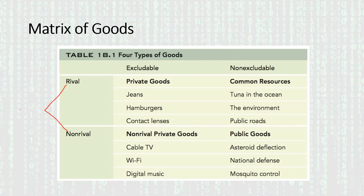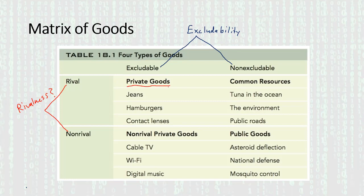So this is the rival dimension, and then on the basis of whether they are excludable or non-excludable — that's the excludability dimension. We have categories for the four different kinds of goods. If goods are both rival and excludable, we call those private goods. I'll say a few more words about private goods in a moment.